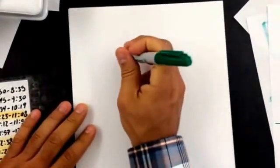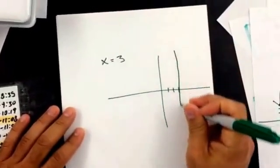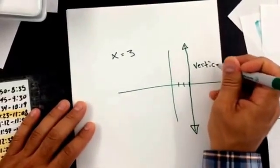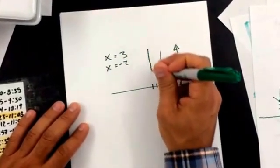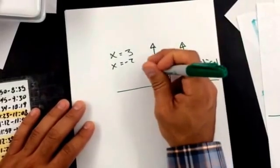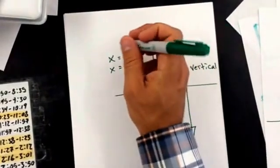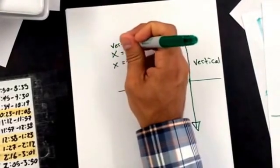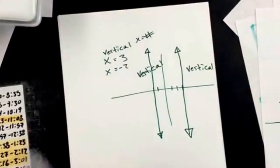The only thing that's left is vertical and horizontal. So if it tells me x equals some number, think about it on a graph. If x equals 3, that's a straight up and down line right here. This is a vertical line. If it tells me x equals negative 2, it's right here. Straight up and down, this is also vertical. So what does that mean? That means any time you have x equals some number, it's going to be vertical. Any time x equals some number and nothing else, it's going to be a vertical line.